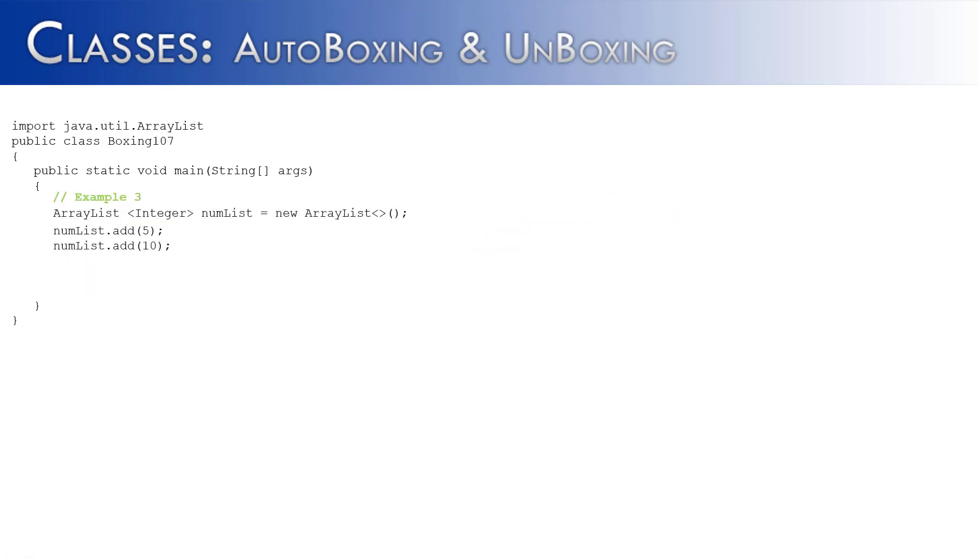Let's look at one more example of autoboxing and unboxing in example 3. What we've done is we created an integer ArrayList called numList and we've stored two values inside of there, 5 and 10. And this is going to be an example of autoboxing because 5 and 10 are primitives, but the ArrayList needs to store them as integers. So it's going to box those two as integer objects and store them inside the ArrayList.